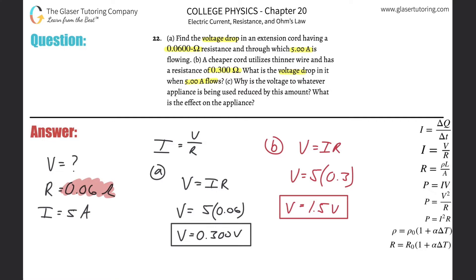Now it says then letter C. Why is the voltage to whatever appliance is being used reduced? That's what happens when you do videos at 6am. What is it reduced by this amount? So why is it?